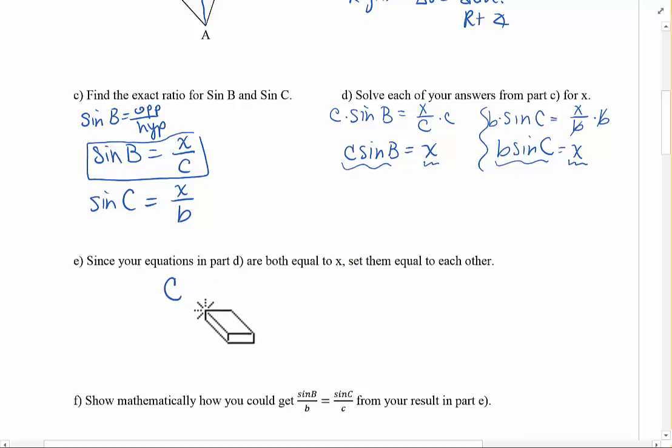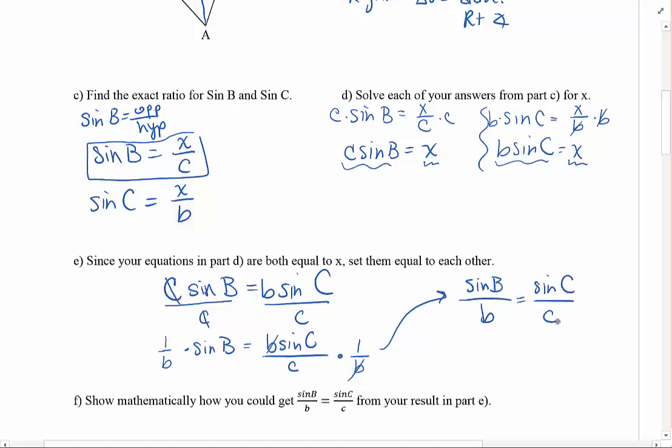But I'm guessing, before I even scroll down, these are both set equal to X, so it doesn't mean that these are actually equal to each other. Totally means that. So since your equations in D are both equal to X, we're going to set them equal to each other. C sine B equals B sine C. And then I'm going to divide both sides by C, which gets me sine B equals B sine C over C. And then I'm also going to divide both sides by B. Those guys would cancel, and I'd end up with sine B over B equals sine C over C. And that's where this comes from.